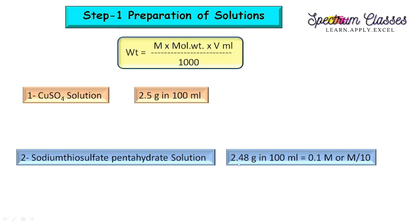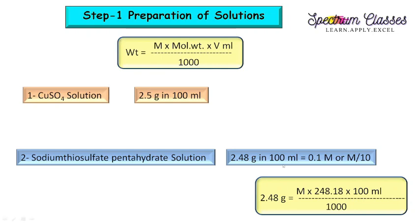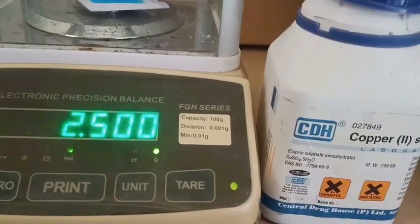The molecular weight of sodium thiosulfate pentahydrate is 248 grams per mole, so I have taken 2.48 grams in 100 ml to prepare an M/10 solution. You can put all the values in the formula to get the molarity value. We will also standardize this with respect to potassium dichromate solution, which I have already discussed in a previous video.